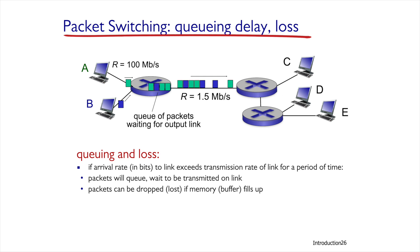The router also processes packets and manipulates them in ways we'll learn later in the course, and these processing times should also be added to the total time calculation. Assuming the rate of arrival of data into the router is higher than the rate at which the router transmits data forward, messages will be preserved in the queue and wait for processing and transmission. If this situation continues long enough to fill the queue capacity, messages will be lost and not saved in the queue.